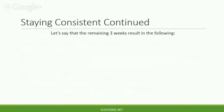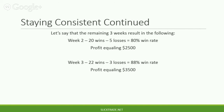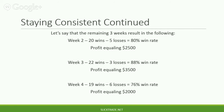Let's say that the remaining three weeks result in the following. Week two: 20 wins, 5 losses, 80% win rate — profit equals $2,500. Week three: 22 wins, 3 losses, 88% win rate — profit equaling $3,500. Week four: 19 wins, 6 losses, 76% win rate — profit equaling $2,000.